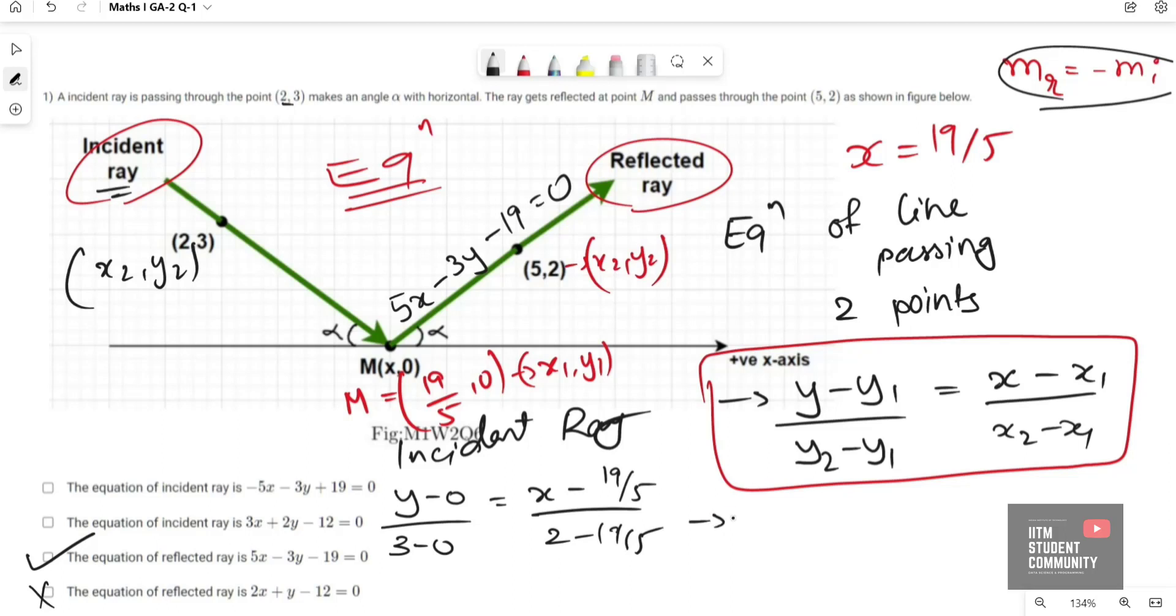Which simplified gives y/3 equals (5x minus 19) divided by (10 minus 19), which equals (5x minus 19) divided by minus 9. Hence the final equation is minus 3y equals (5x minus 19) divided by minus 3, giving 15x minus 5y plus 19 equals 0.